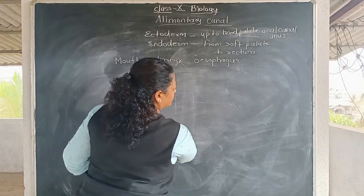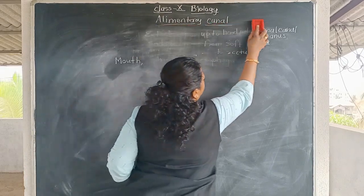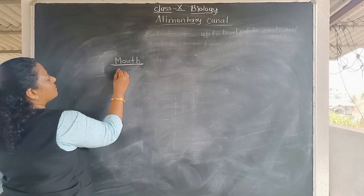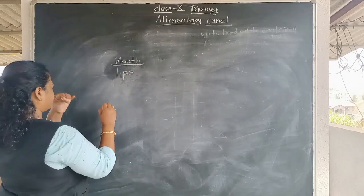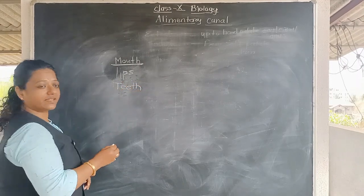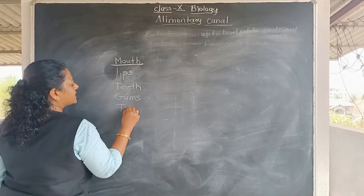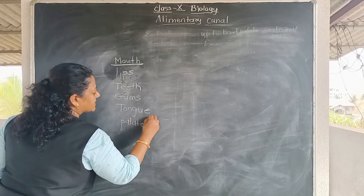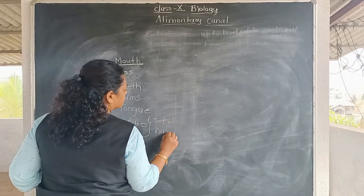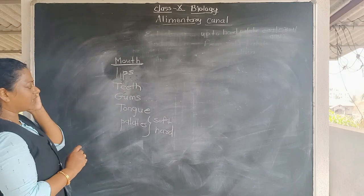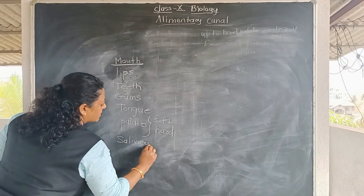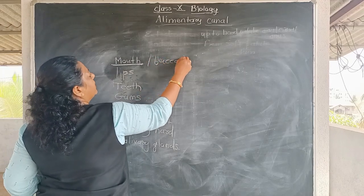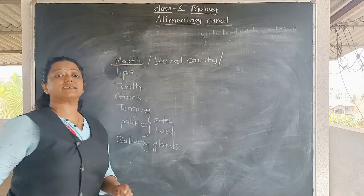Now we will talk about the mouth. The mouth is composed of lips, gums, tongue, palate — which is of two types: soft and hard — and salivary glands are present. The mouth is also called the buccal cavity, and it is also called the buccopharyngeal cavity. It is called buccopharyngeal because buccal cavity opens into the pharynx — after the buccal cavity, the pharynx is also a cavity-like structure. So together they form the buccopharyngeal cavity.